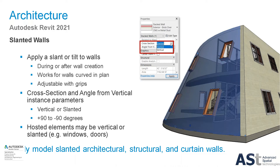A big feature in the 2021 release is slanted walls. It's really easy now to draw a wall and instead of having to apply it to a massing face, you can go to the cross-section drop-down, choose slanted walls, and then adjust the angles. It's a lot easier and more intuitive. It also works with curved walls, so it's not just restricted to a straight line wall. You can use this tool to design more complex and beautiful architectural forms.